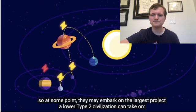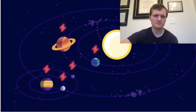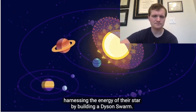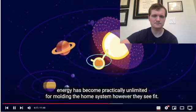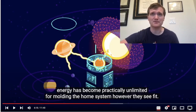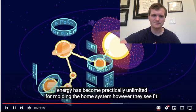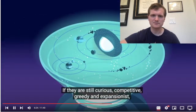As a civilization expands and uses more and more stuff in space, its energy consumption scales with them. So at some point, they may embark on the largest project a lower Type 2 civilization can take on: harnessing the energy of their star by building a Dyson Swarm. They did another video on this topic — it's a pretty cool topic. Just the idea of building solar panels right next to the sun just makes sense, because you get much more energy when you're that much closer.